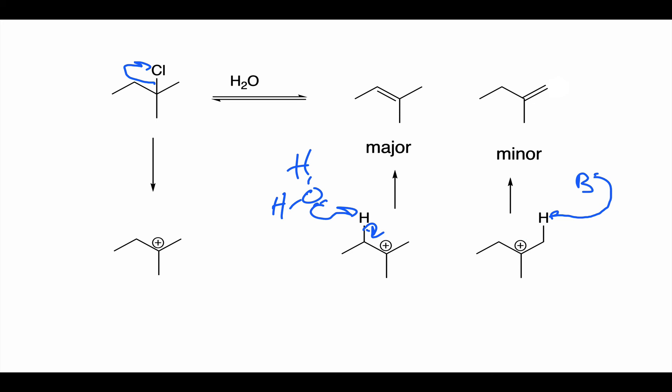The important thing here is the heat — you need heat to get this to go. If you do this reaction at a low temperature, you're back to an SN1-type reaction where water substitutes in and you just end up with the tertiary alcohol. High heat will favor elimination in this reaction.